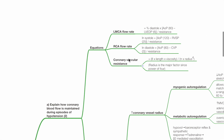Important equations: Left coronary artery flow rate equals the percentage of diastolic time throughout the cardiac cycle, times aortic pressure minus LVEDP, divided by resistance. Right coronary artery flow rate during systole equals aortic pressure minus RVSP divided by resistance, and during diastole, AOP minus CVP divided by resistance.